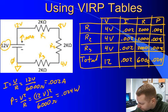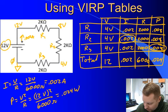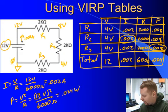Now we can answer just about any question about this circuit. What's the current through R2? Look at the table: 0.002 amps. What's the power dissipated by R3? Go to the R3 row, power column: 0.008 watts. The VERP table is a very useful tool for analyzing circuits.